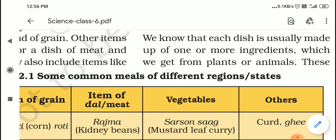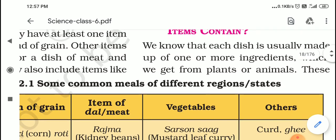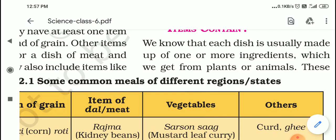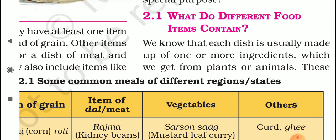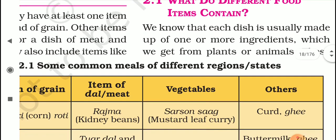Rice and milk are the ingredients. Rice is obtained from plants, so rice is a plant product. Milk we get from animals, so milk is an animal product. Another example is chicken curry. Chicken curry ingredients are chicken, spices, ghee, water, etc. Chicken is an animal product and spices are a plant product. So we need some ingredients while preparing our food, and these ingredients we obtain from either plants or animals.